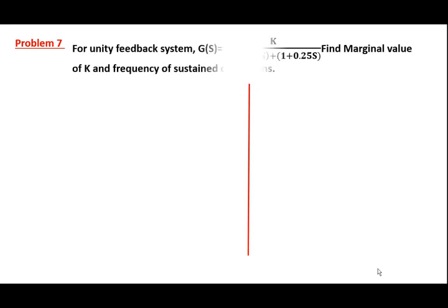Problem 7. For a unity feedback system, G(S) is given as K divided by S into (1 plus 0.4S) into (1 plus 0.25S). Here we need to find out the marginal value of K and the frequency of sustained oscillations.